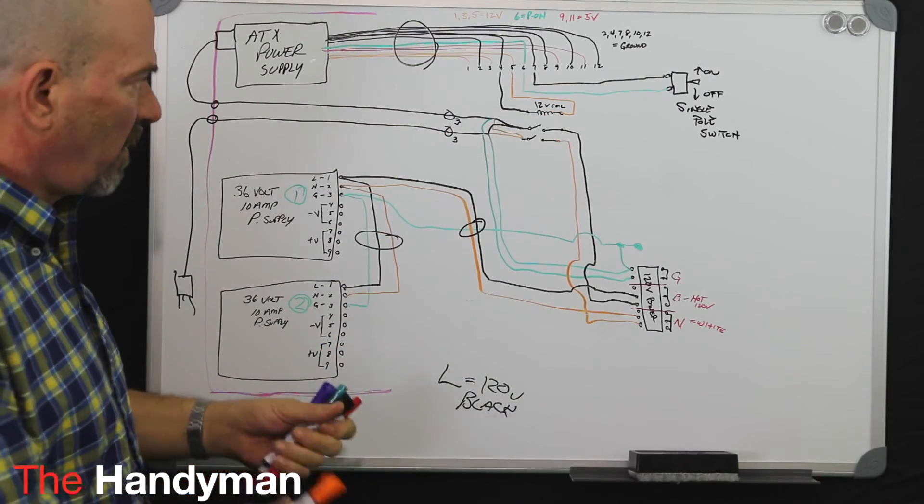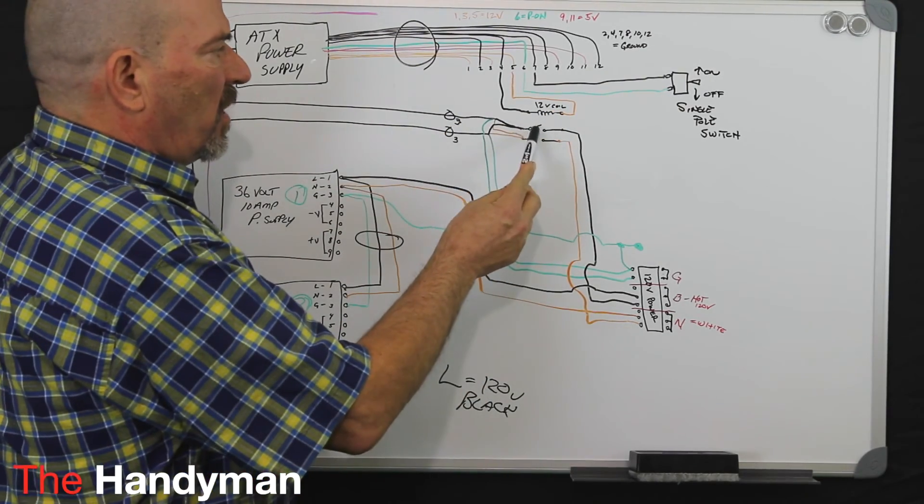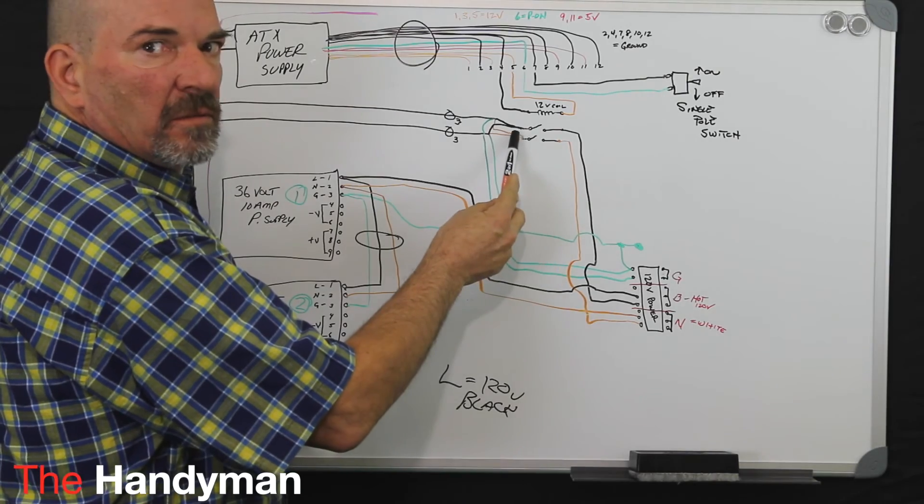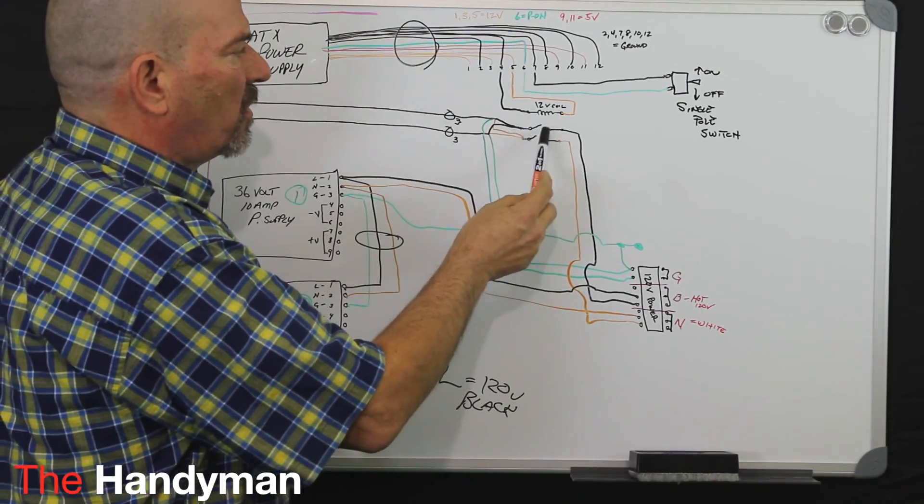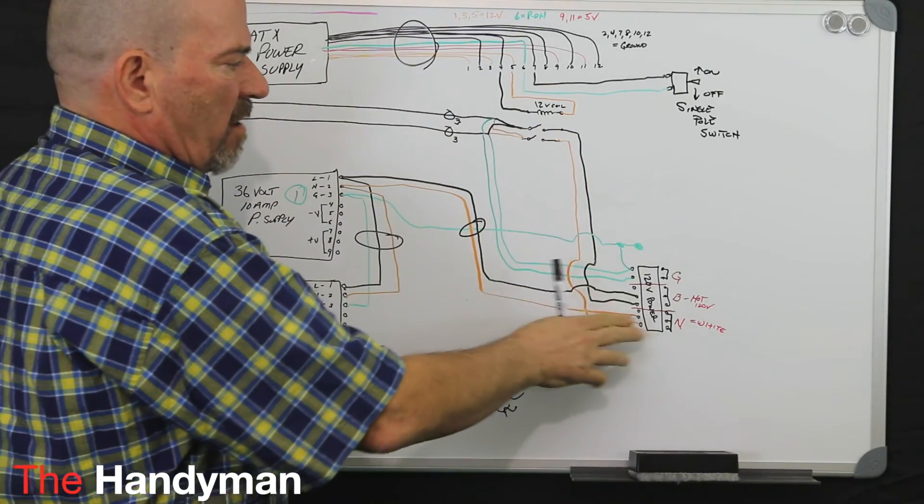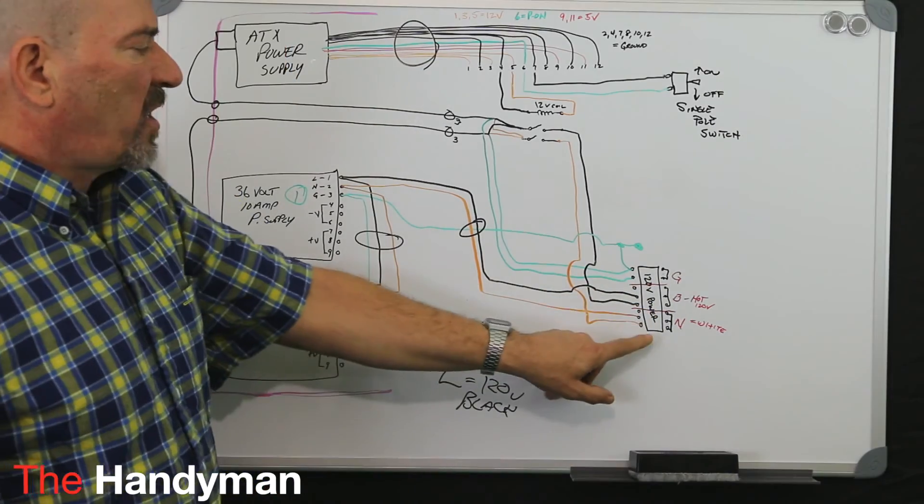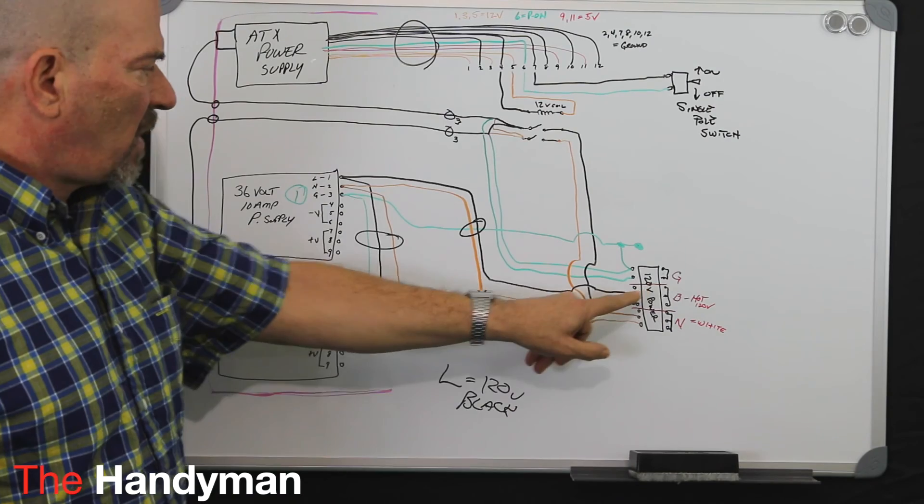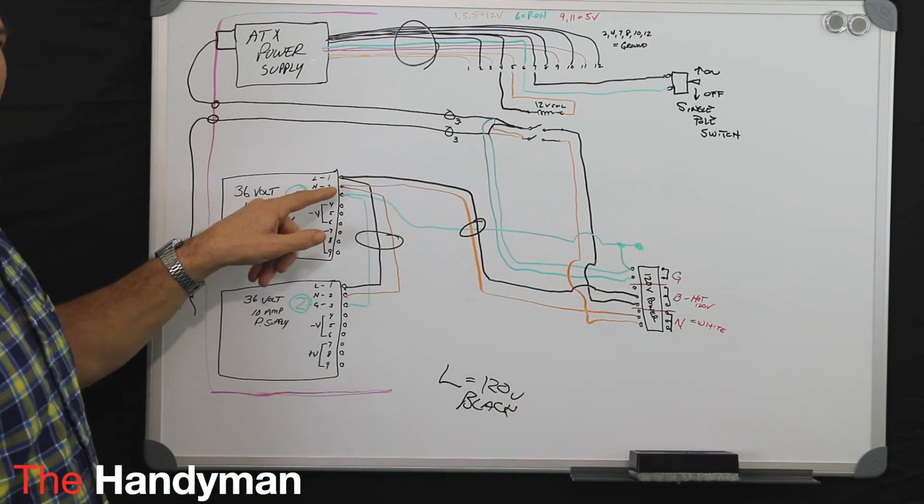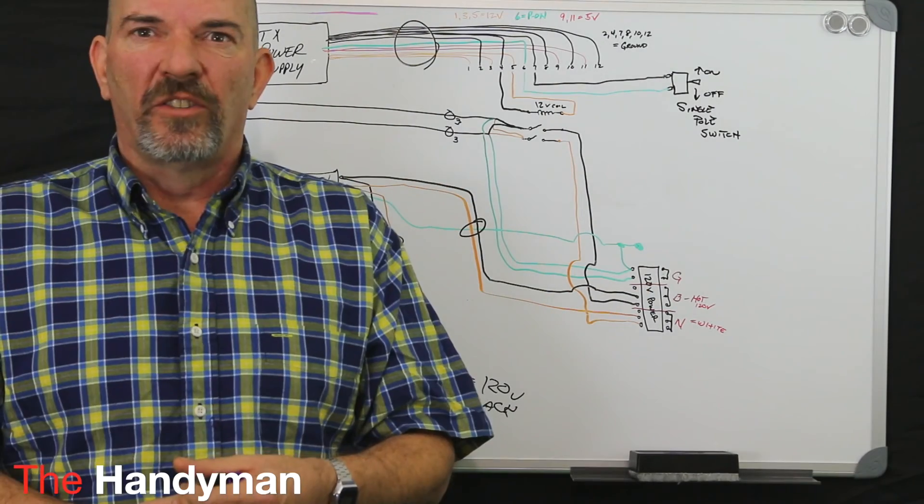When that coil energizes, these two contact points, they close. This allows your power to come down and energize your 120 volt power strip. Once that energizes, that sends your power out to your 36 volt power supplies.